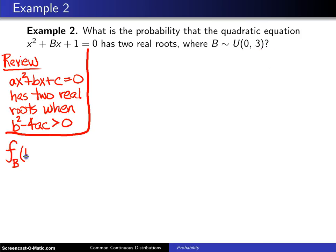its probability density function will be 1 over 3 minus 0, which is one-third for b values between 0 and 3. It's been written in this particular case using the index b rather than the usual index x.